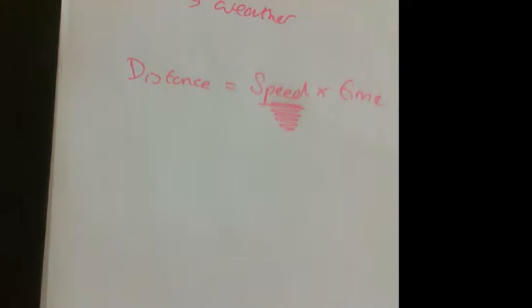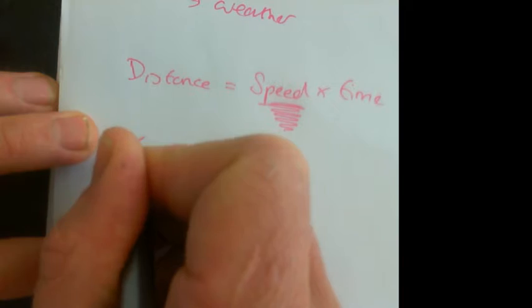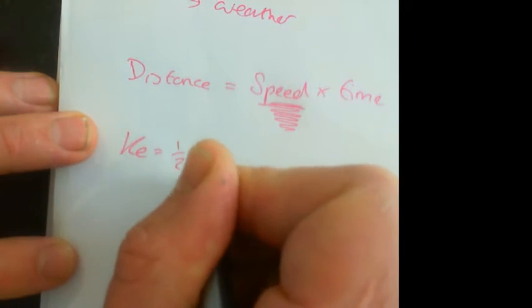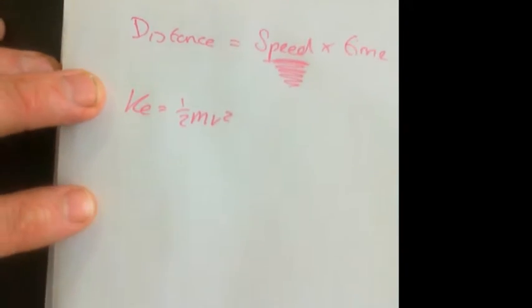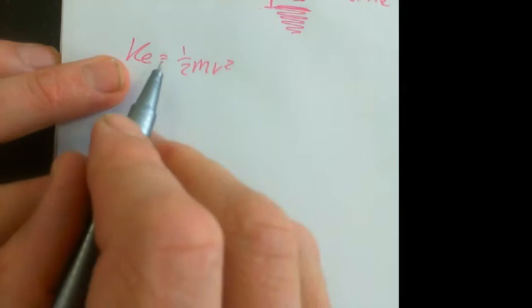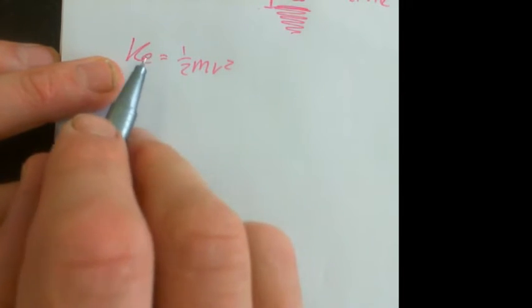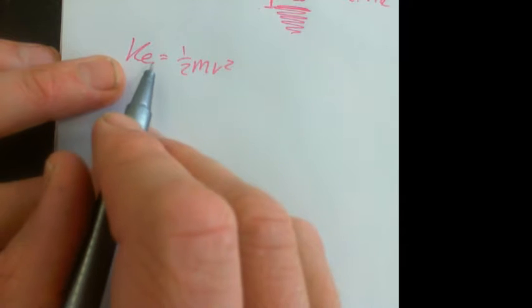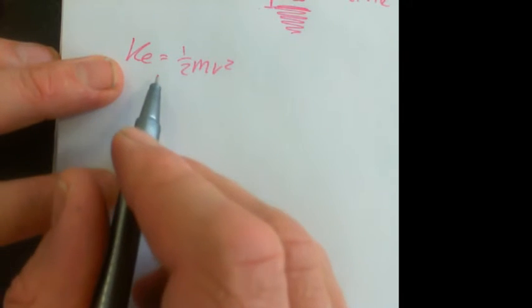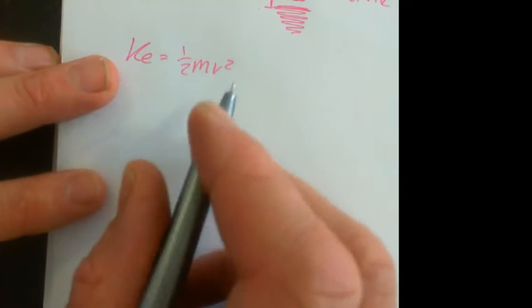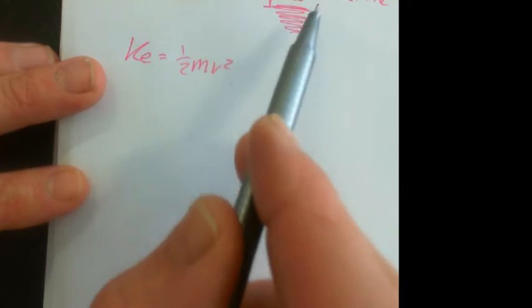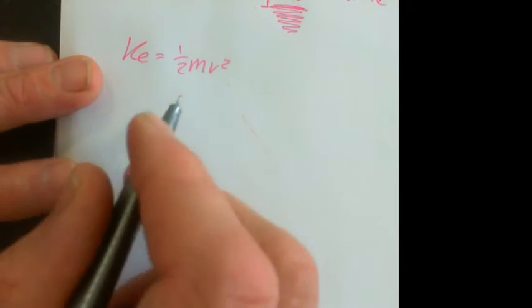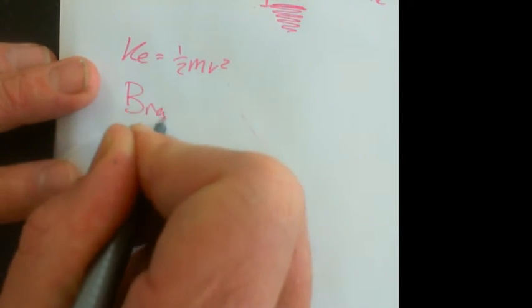The other thing that's really useful to know is that if you remember we said kinetic energy equals a half mv squared. We know that kinetic energy is the amount of energy that you need to remove from an object in order to make it stop by pressing the brakes. So not only does the distance increase with speed, but when it comes to actual braking distance...